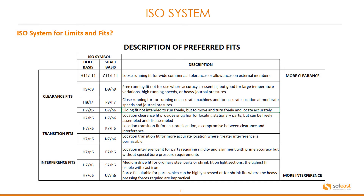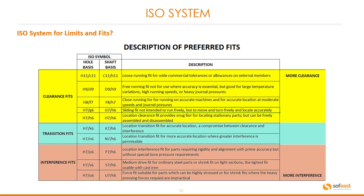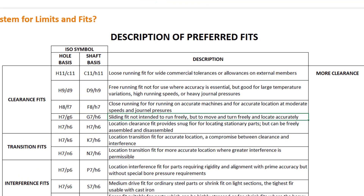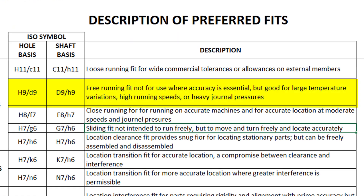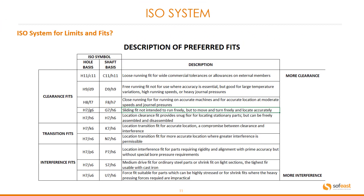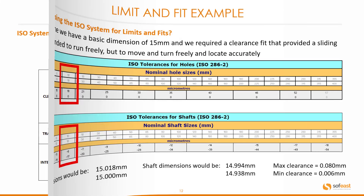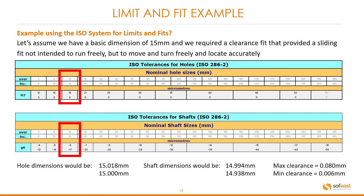The ISO system for limits and fits has a table format. We can see here we have three separate zones: the clearance fit, transition fit, and interference fit. The ISO symbols give us the codes that we need to reference and machine against. If we take H9/D9 for example in the clearance fit zone, this is a free running fit — not for use where accuracy is essential, but good for large temperature variations, high running speeds, or heavy journal pressures. We can see on the right hand side, at the top there is more clearance whereas at the bottom there is more interference.